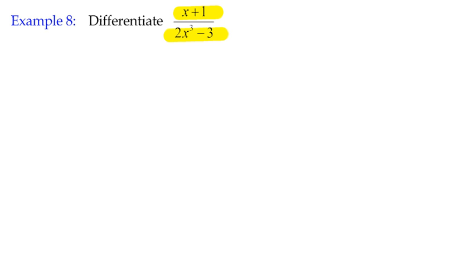It's not defined as a function yet, so I'll just rewrite that as f of x, so we have a function which is, of course, in this case, a rational function: x plus 1 over 2x cubed minus 3.